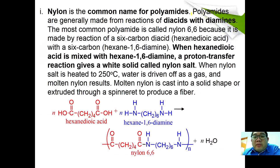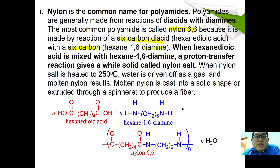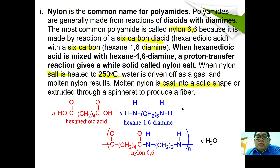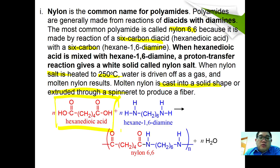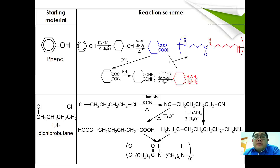Nylon is the most common name for polyamide. Polyamides are made from the reaction of a diacid and a diamine. The most common polyamide is nylon 6-6, named because it is made from 6 carbons of diacid and 6 carbons of diamine. Hexanedioic acid is mixed with hexane-1,6-diamine; a proton transfer reaction gives a white solid salt called nylon salt. When nylon salt is heated at 250°C, water is driven off as a gas and molten nylon results. Molten nylon can be cast into a solid shape or extruded through a spinneret to produce fiber. This is the general equation for how nylon 6-6 is formed from hexanedioic acid and hexane-1,6-diamine, with water as a side product.